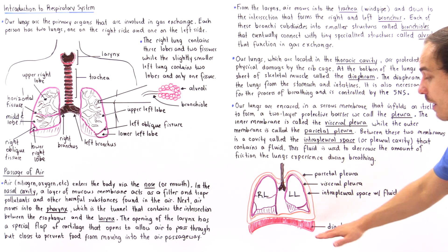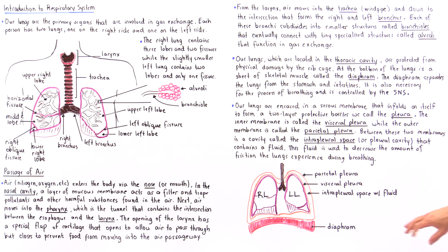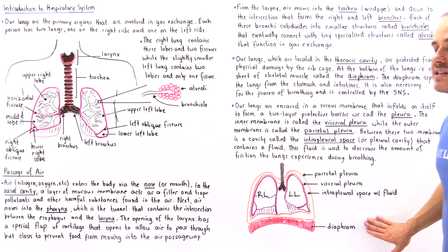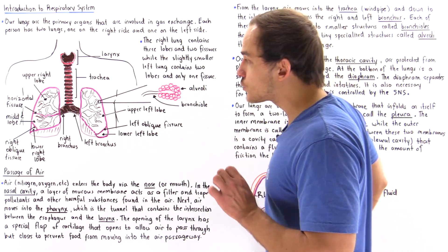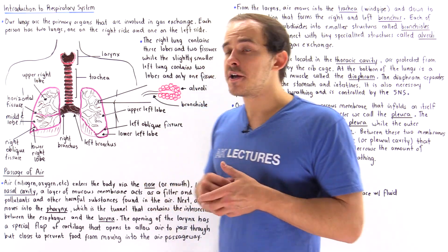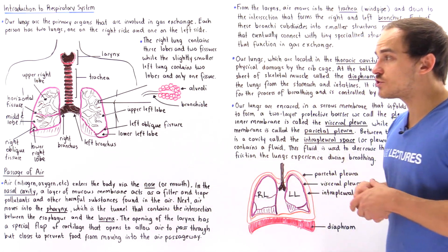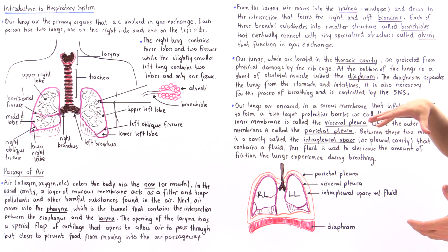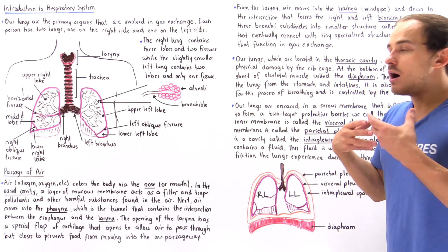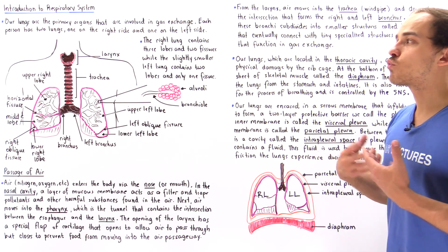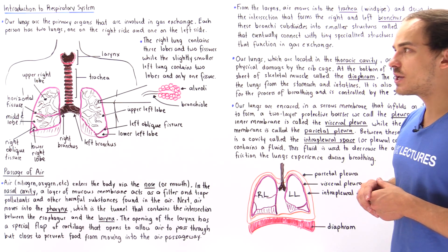Below our lungs we have this skeletal sheet of muscle known as our diaphragm. As we'll see in the next several lectures, the diaphragm is a very important structure because it allows the lungs to carry out the process of respiration — the process of breathing.